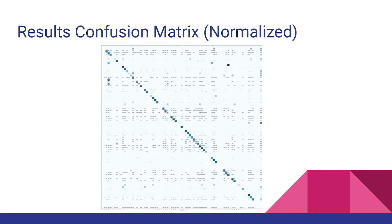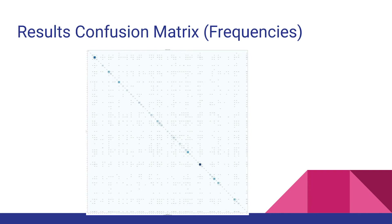We can draw a confusion matrix showing which IPA symbols have been correctly detected by the neural network. Looking at a normalized version, most intensities are along the diagonal, indicating correct classifications. There are some consistently wrong predictions, but when the confusion matrix is plotted weighted by frequency, all intensities concentrate on the diagonal. This means that although some phonemes cause confusion, those phonemes are extremely rare in the dataset.